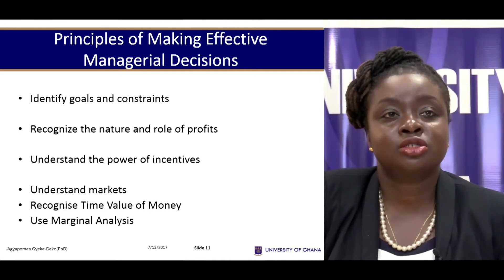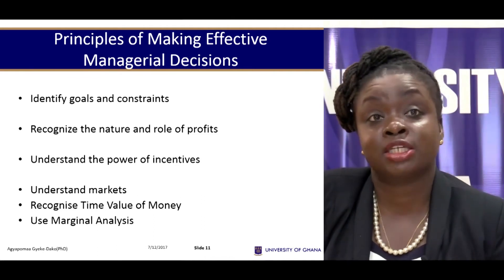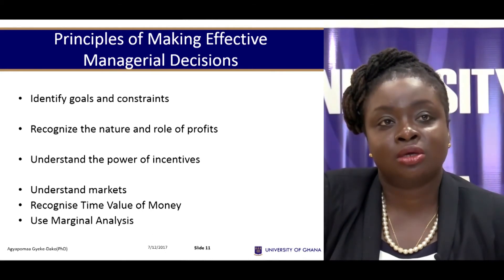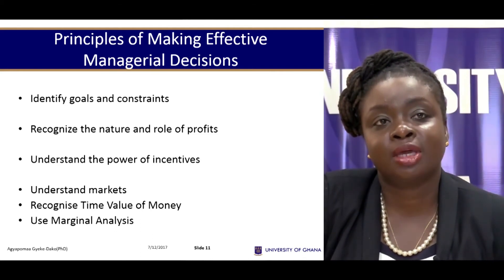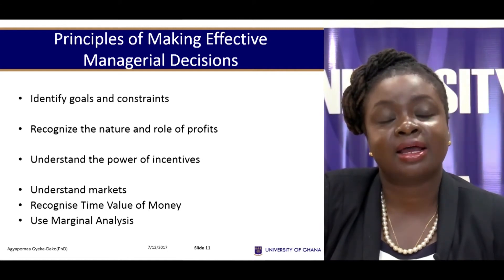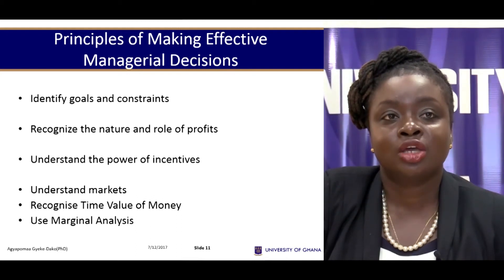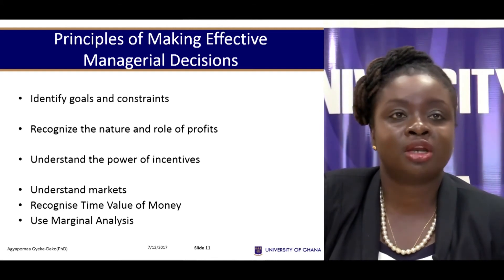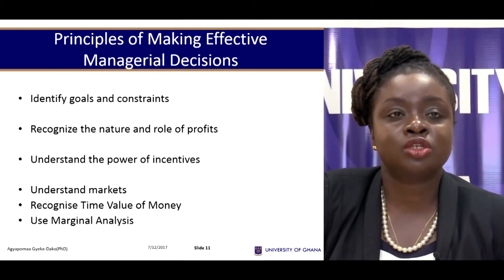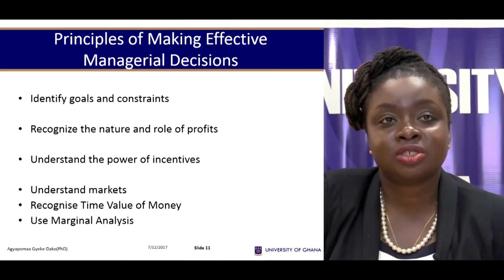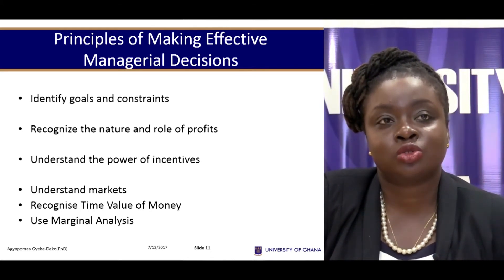And then the last thing is to be able to use marginal analysis. You'll see in this course that every decision that we'll be making will be made at the marginals and not at the totals. Totals are good, but they would usually give wrong signals. So it's important that you look at the additional benefits. When you're going to make a decision, you want to compare the additional benefits to the additional cost to be able to make an effective decision — not just the total benefits to the total cost.